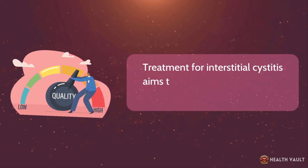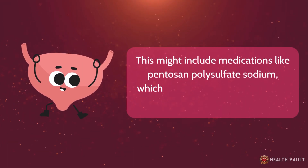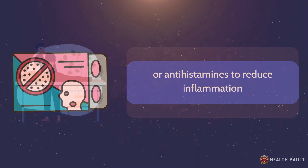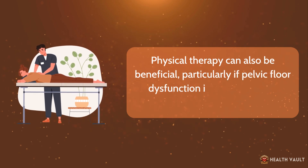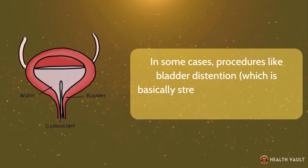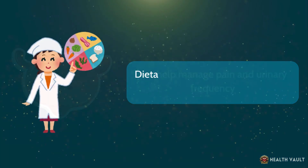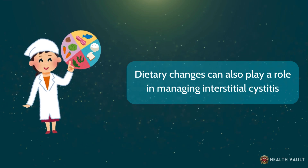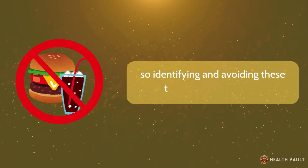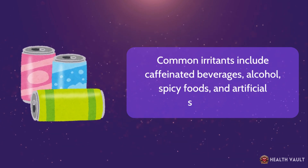Treatment for interstitial cystitis aims to alleviate symptoms and improve quality of life. This might include medications like pentosan polysulfate sodium, which can help restore the bladder lining, or antihistamines to reduce inflammation. Physical therapy can also be beneficial, particularly if pelvic floor dysfunction is contributing to symptoms. In some cases, procedures like bladder distention — stretching the bladder with water or gas — can help manage pain and urinary frequency. Dietary changes also play a role; common irritants include caffeinated beverages, alcohol, spicy foods, and artificial sweeteners.